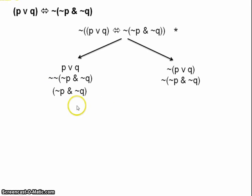So now we have not P and not Q, we star our formula. And then here, of course, we have the conjunction rule. Not P, not Q.